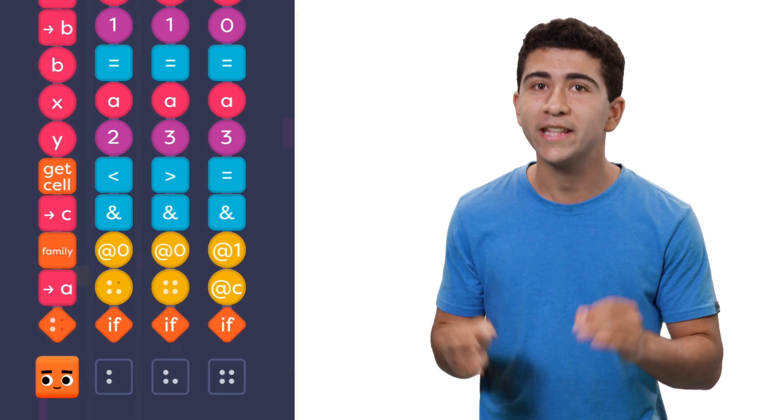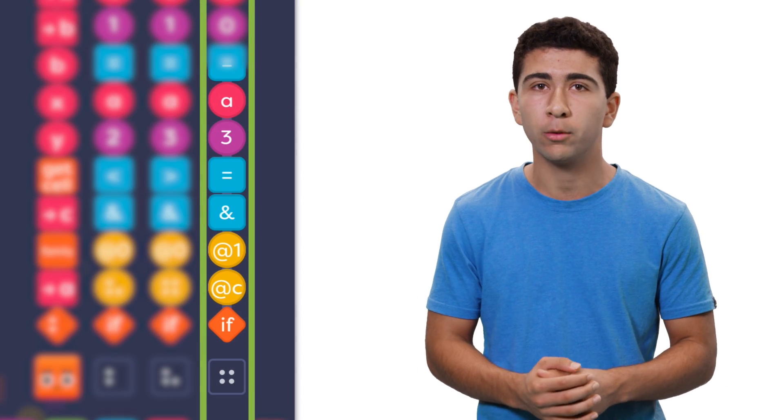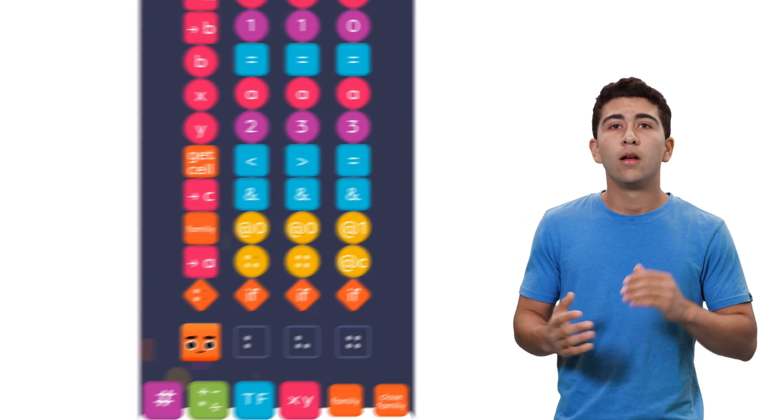There's three rules. First, if a live cell has too many live neighbors, it'll die of overcrowding. But, if a live cell doesn't have enough live neighbors, it'll die of loneliness. However, if a dead cell has just the right amount of live neighbors, it'll come back to life.